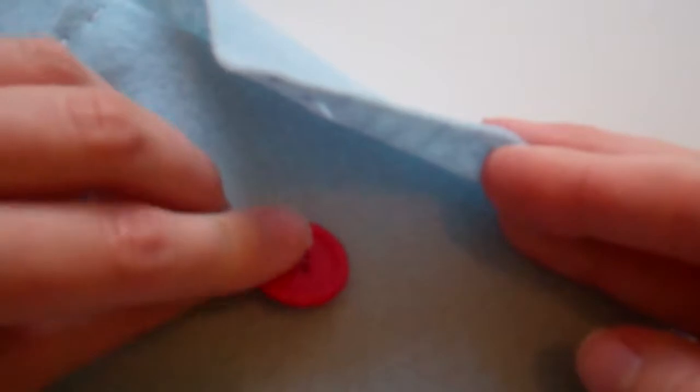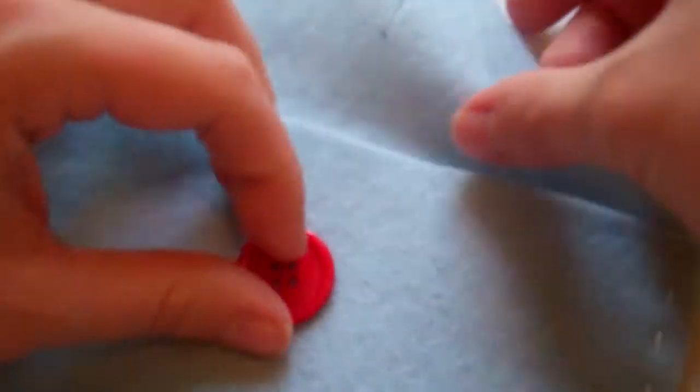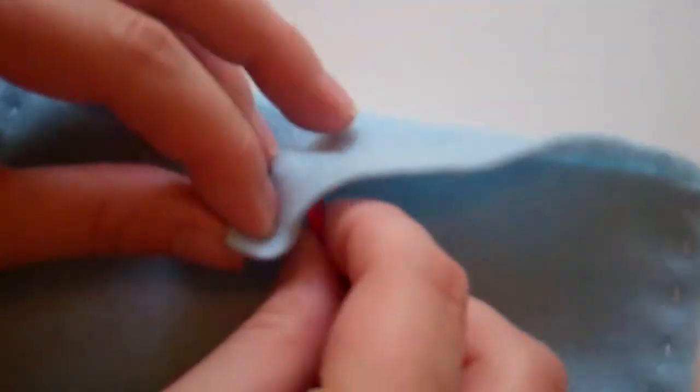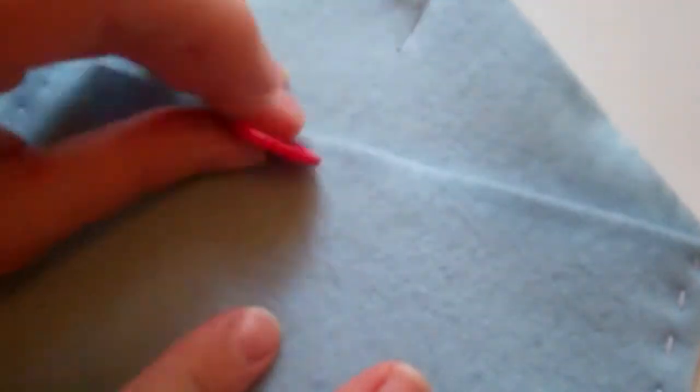Now that we have a hole for the button, it is time to figure out where the button will go. Maybe some of you thought that that button gets put on the flap, but actually, the button is going to go on the envelope. The only reason it looked like it was on the flap was because it goes through the button hole and shows here.